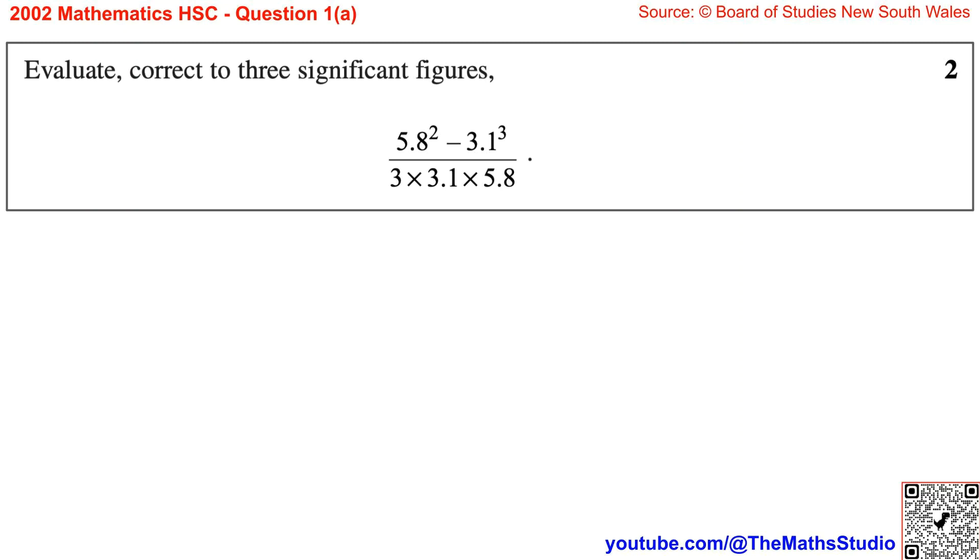Question 1, Part A. Evaluate, correct to 3 significant figures: 5.8 squared minus 3.1 cubed over 3 times 3.1 times 5.8.